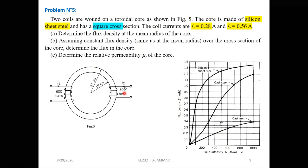The new thing in this exercise that we have not seen before: here we have two coils, and also we have two power sources. The current here is I1 = 0.28 A and I2 = 0.56 A.